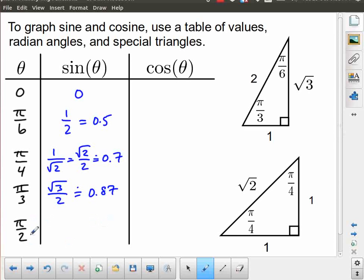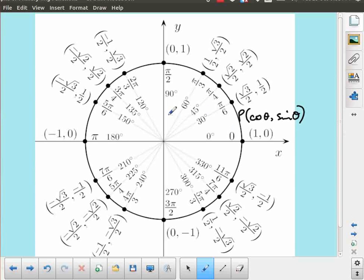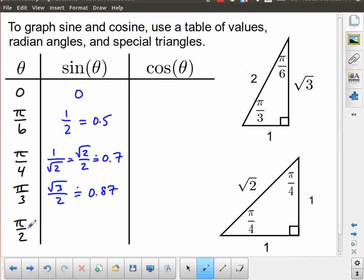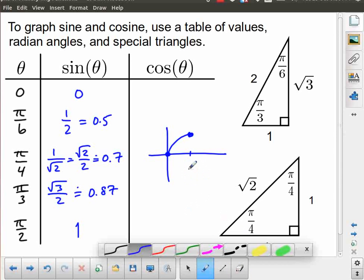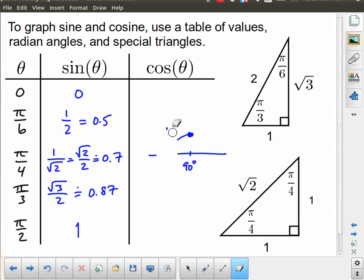The sine of pi by 3 is root 3 over 2. There's no rationalization necessary for that one. And that has the approximate value of 0.87. And then the sine of pi by 2, which we don't get from the special triangles. Here's pi by 2. The sine of pi by 2 is the y coordinate. So that's equal to 1. And that's what we expected because if you remember the graph, it starts at 0 and the first thing it does is it goes up to a maximum. And that maximum occurs at pi by 2. Or if you're thinking back to maybe some previous experience with this, that occurs at 90 degrees.